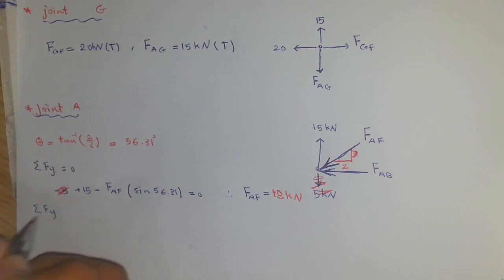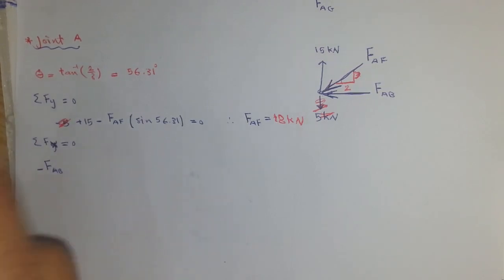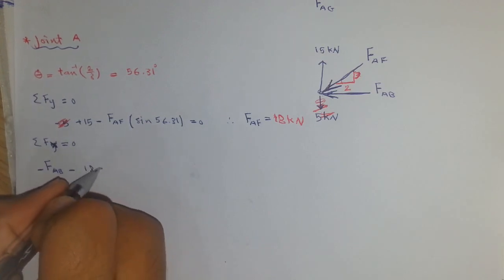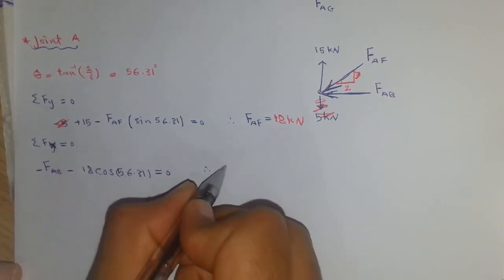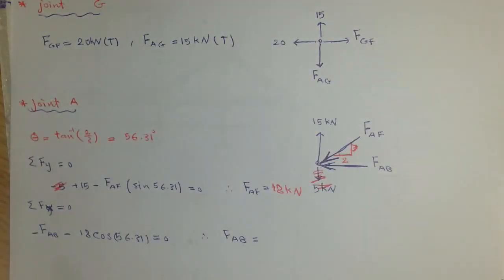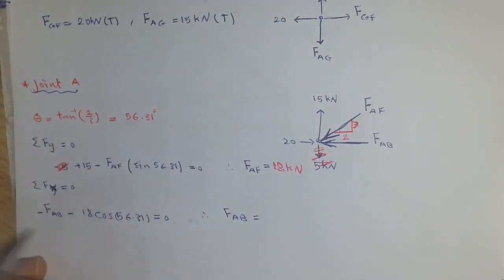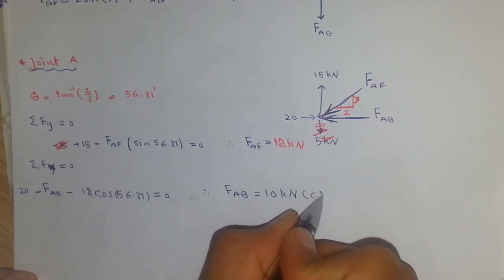Applying the second equation of equilibrium at joint A, summation of Fx equals zero: F_AB minus F_AF multiplied by cosine 56.31 equals zero, and we also include Ax of 20 kilonewtons from the diagram. Then F_AB equals 10 kilonewtons, and since the result is positive it is compression.